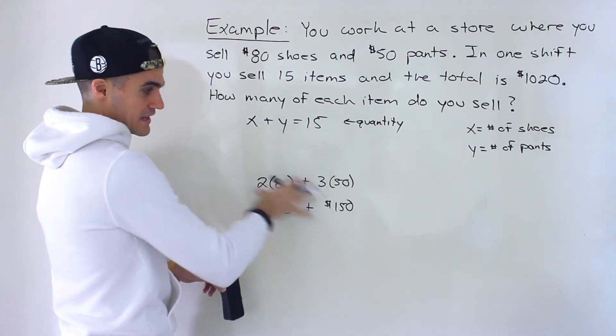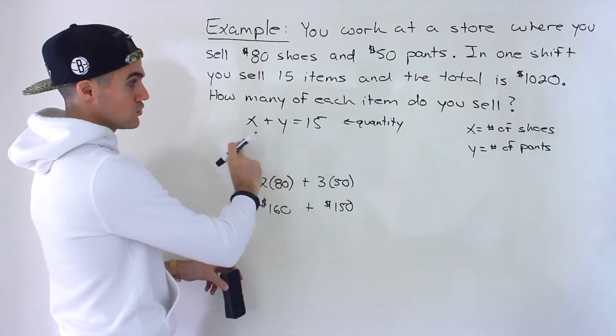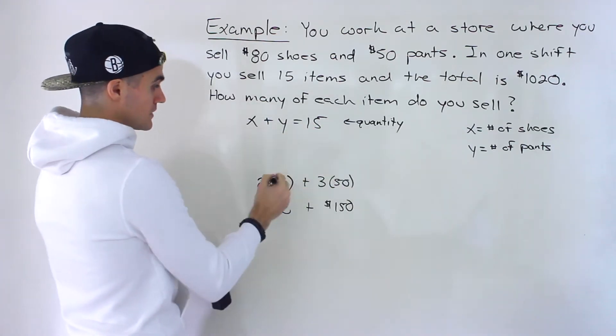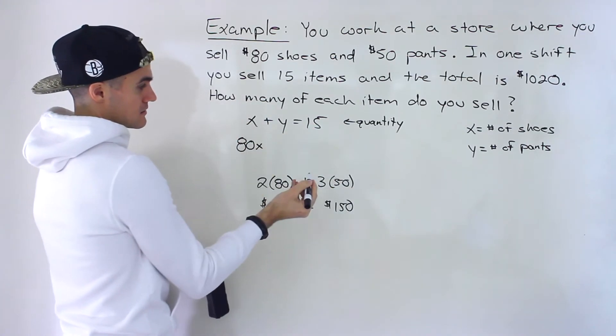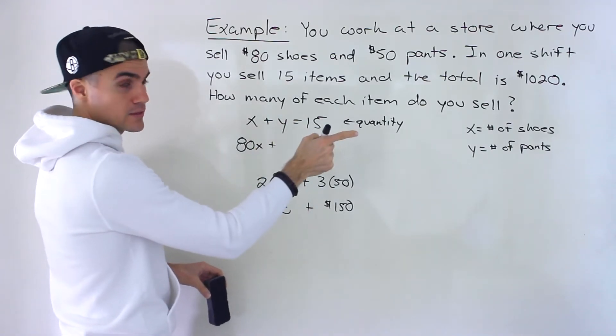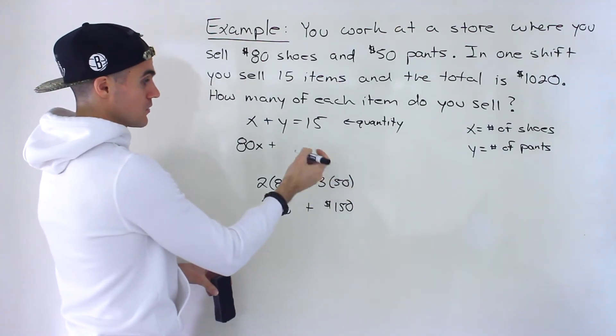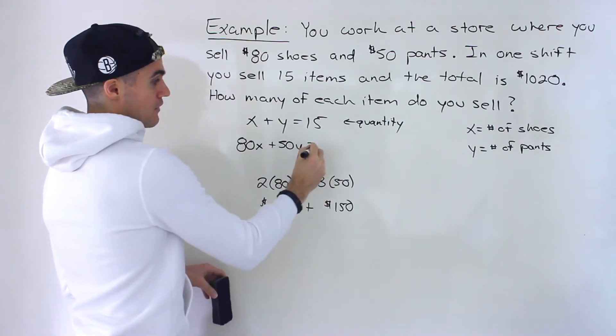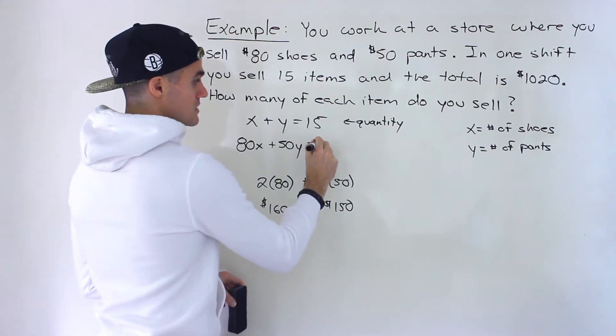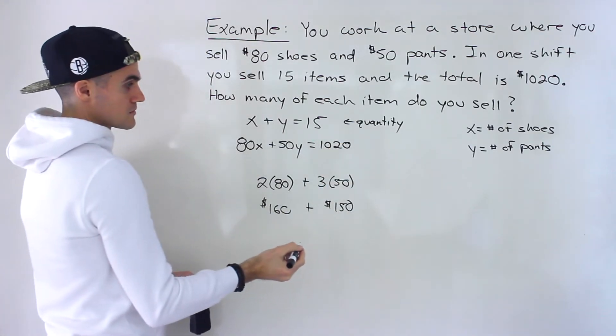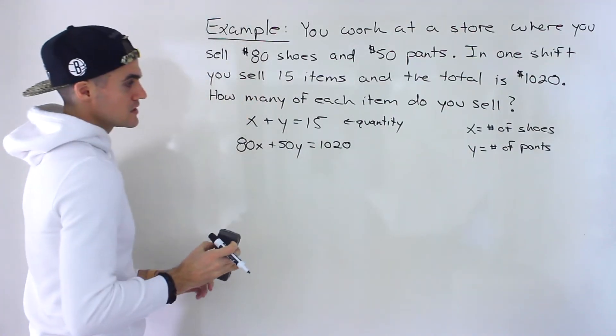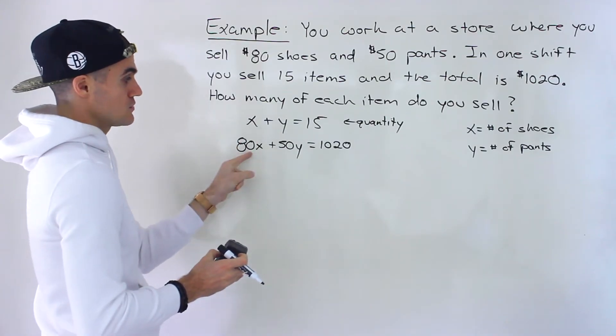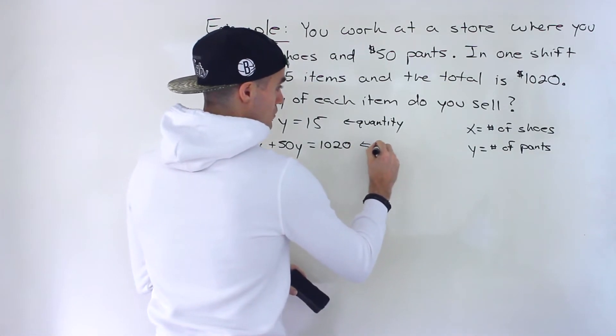And so to create, using this intuition, to create a revenue equation, what's the revenue generated if we sell an x number of shoes? Well, it's going to be 80x, plus what's the revenue generated with the y number of pants that you sell? It's going to be 50 per pant times the number of pants. And then this revenue is equal to $1,020. So that's how you set up these equations. This equation deals with the quantity, the number of pants and shoes. This equation here deals with the revenue.